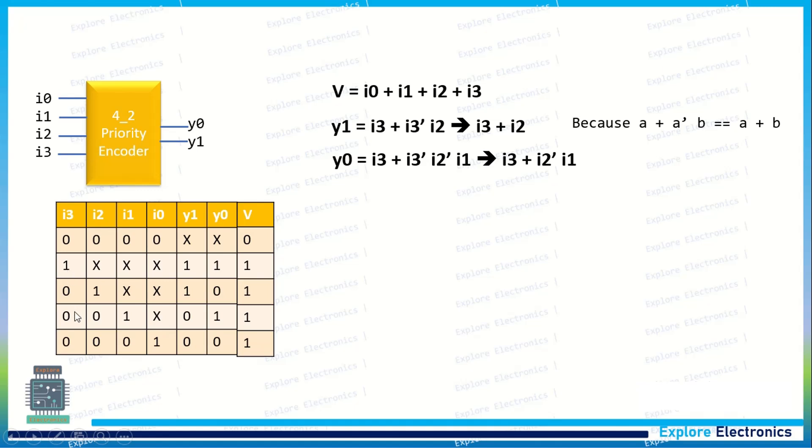So here also we can apply the same rule. i3 + i3̄ is there, so we will be getting i3 only. i3 + i2̄·i1 is the final expression.